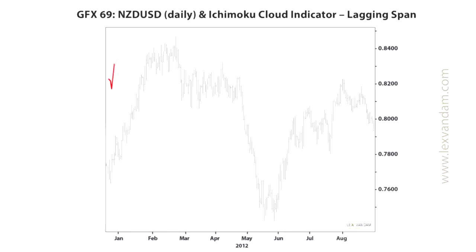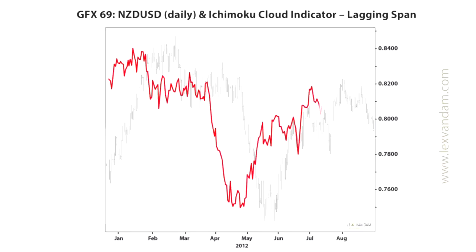The cloud is also believed to act as an area of support and resistance, and may be used as a filter in combination with another trading system. The filter could for example be to not take any short signals while the price is above the cloud, because that is bullish territory. Let's now look at the fifth and last component of the Ichimoku cloud: the lagging span.